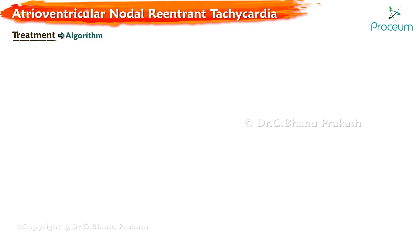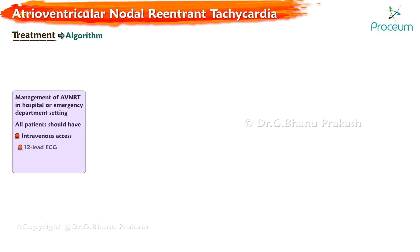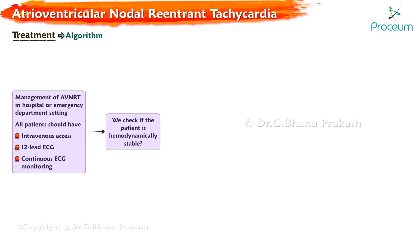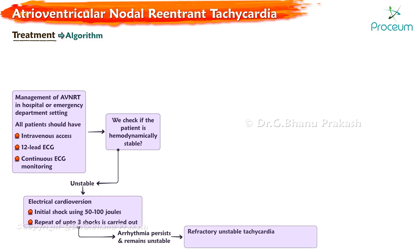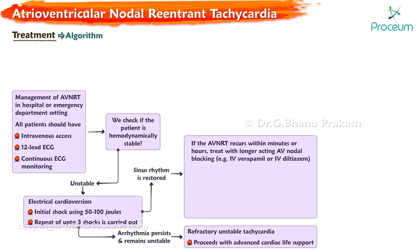Algorithm for the acute treatment of AVNRT in the hospital or emergency department setting: all patients should have intravenous access, 12-lead ECG, and continuous ECG monitoring. If the patient is hemodynamically unstable, electrical cardioversion with an initial shock of 50 to 100 joules, with repeat up to 3 shocks, is carried out. If the arrhythmia persists and remains unstable, it is classified as refractory unstable tachycardia and treatment proceeds with advanced cardiac life support. If sinus rhythm is restored, follow-up includes monitoring ECG for 1 to 2 hours, diagnostic evaluation, and consideration of prevention therapy.